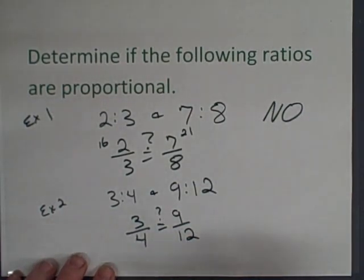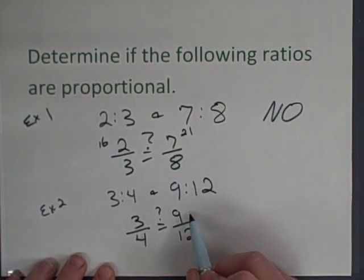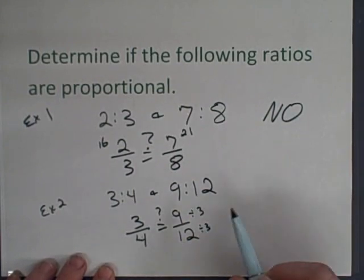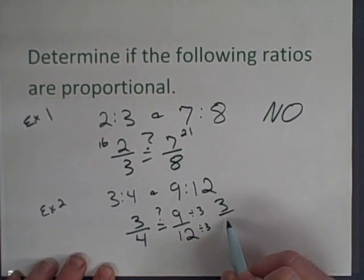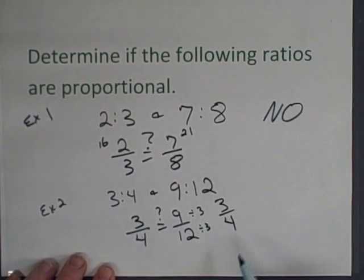Well again you can always reduce both of the fractions. Three fourths are already reduced. And nine twelfths, the greatest common factor of that if you divide by three you will notice that this ends up being three fourths as well. So three fourths obviously equals three fourths so these are proportional.